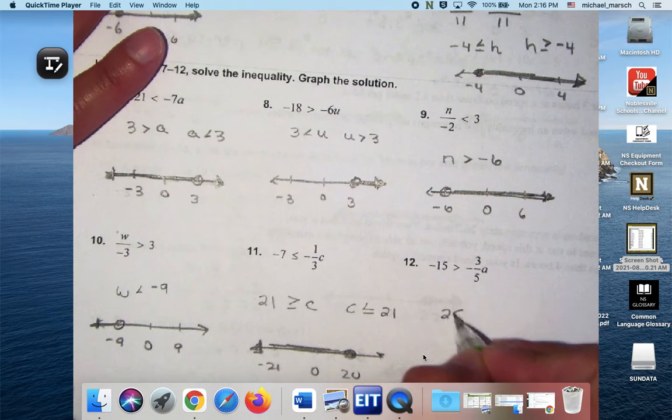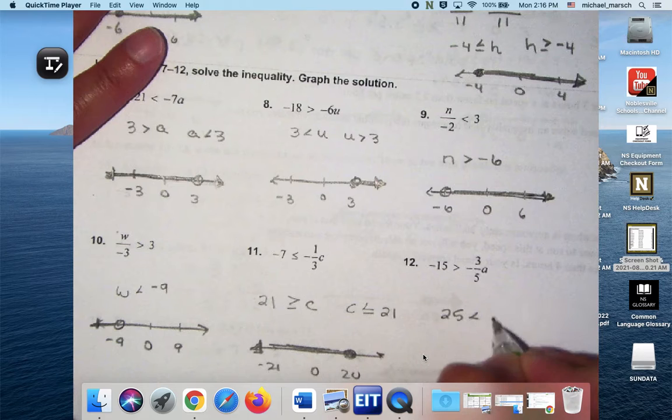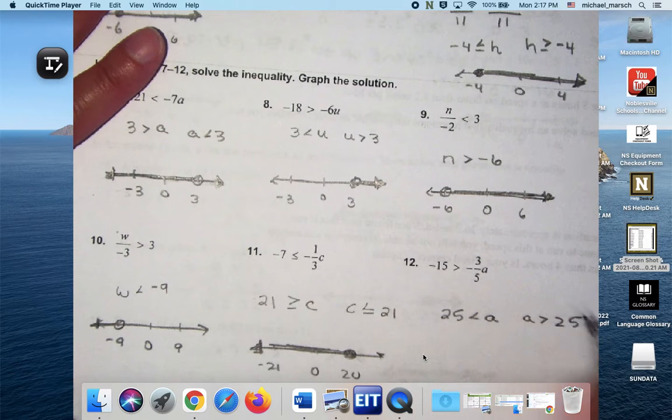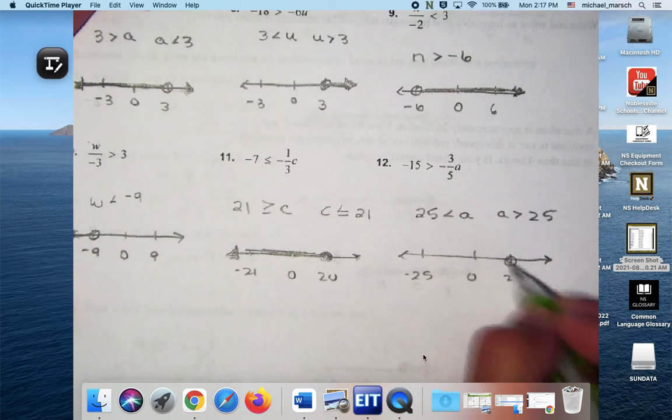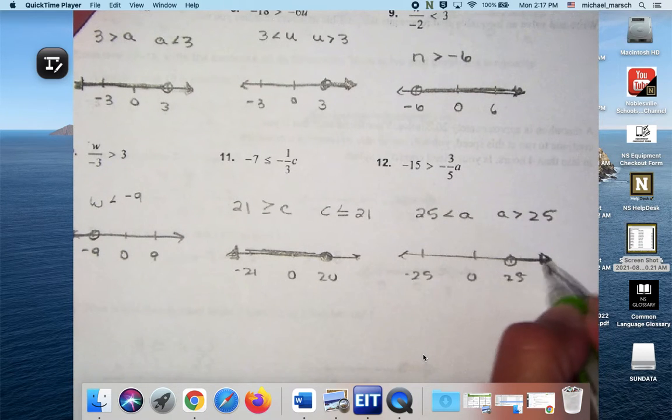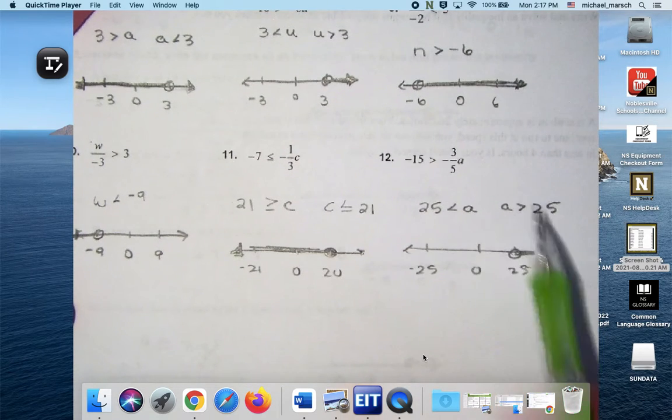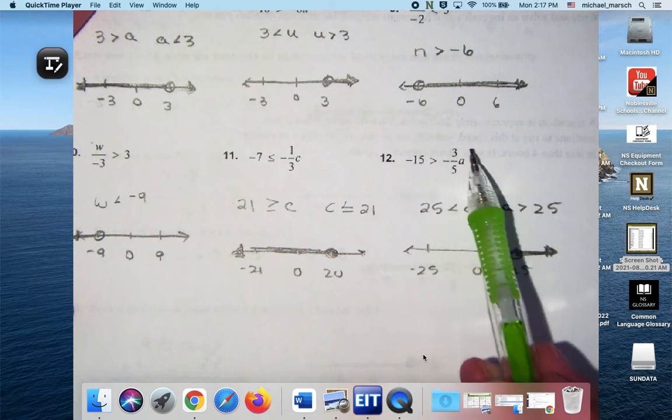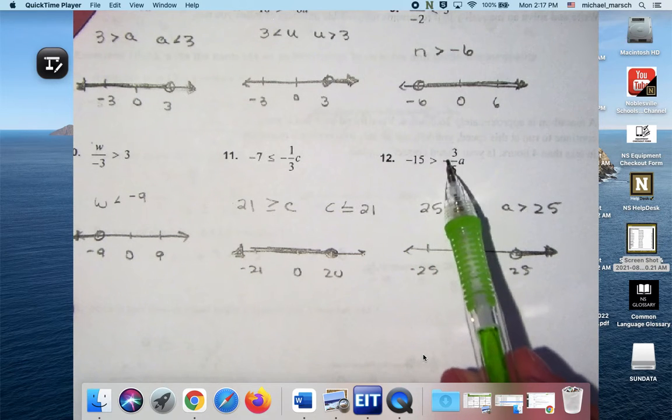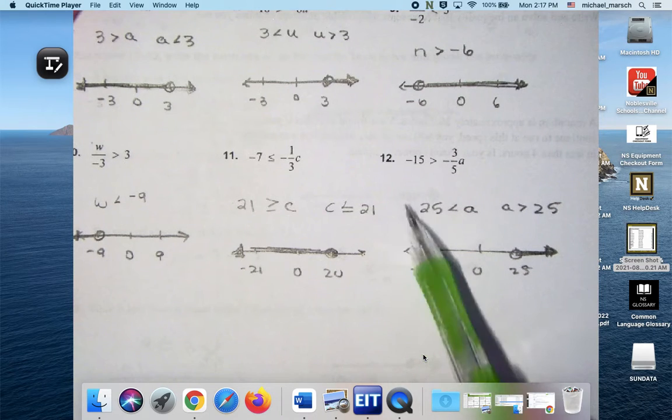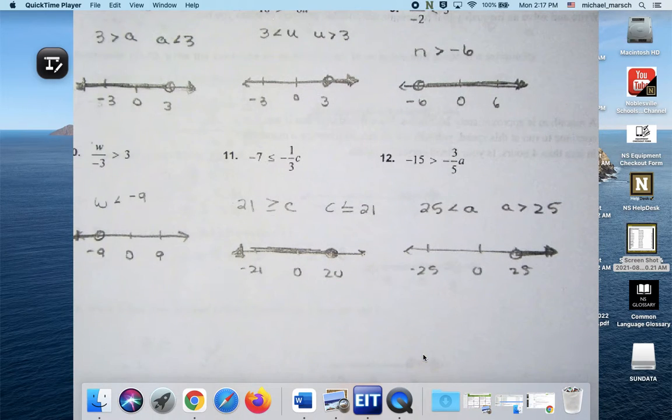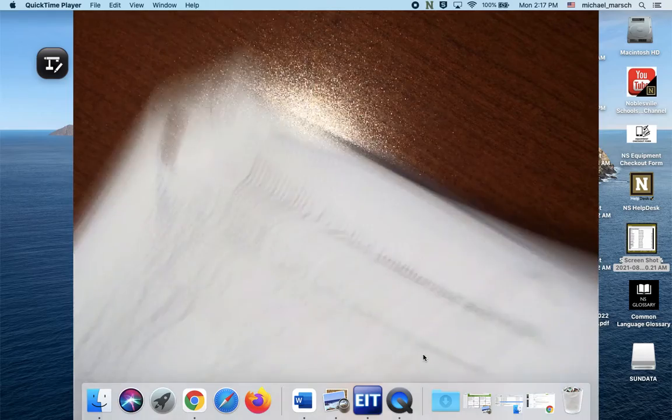So this gives me 25 is less than A. A is greater than 25. Raise your hand if you're not sure how I got 25 here. Okay. I multiplied both sides so I had negative 75 divided by or is greater than negative 3A. I'm going to divide by negative 3 so I get positive 25. All right.